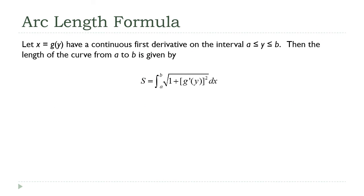So far we've been working exclusively with functions defined as a function of x — y equals f of x. But as we saw with the volume formulas, there's nothing magical about functions of x. This formula works just as well if we have x defined as a function of y. Then it's the exact same formula: the integral from a to b of the square root of 1 plus g prime of y squared dy, where a and b are a range of y values.